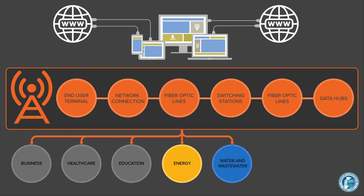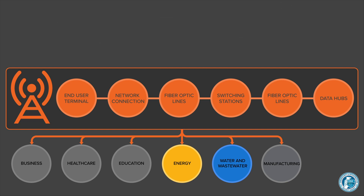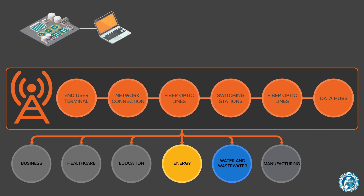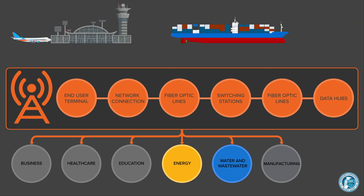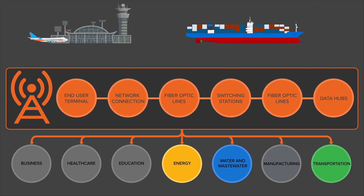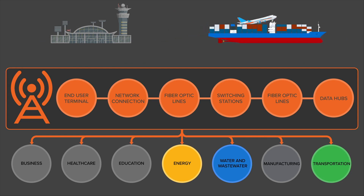Virtually all modern infrastructure systems employ some form of internet or intranet-based SCADA system to monitor and control activities. For example, water and wastewater systems often use internet or intranet-based SCADA systems to monitor water quality, control water treatment processes and detect system leaks. All of these operations would be much more difficult without networked communications. Transportation systems like ports and airports use internet-based systems to track cargo and ensure that traffic is routed safely.